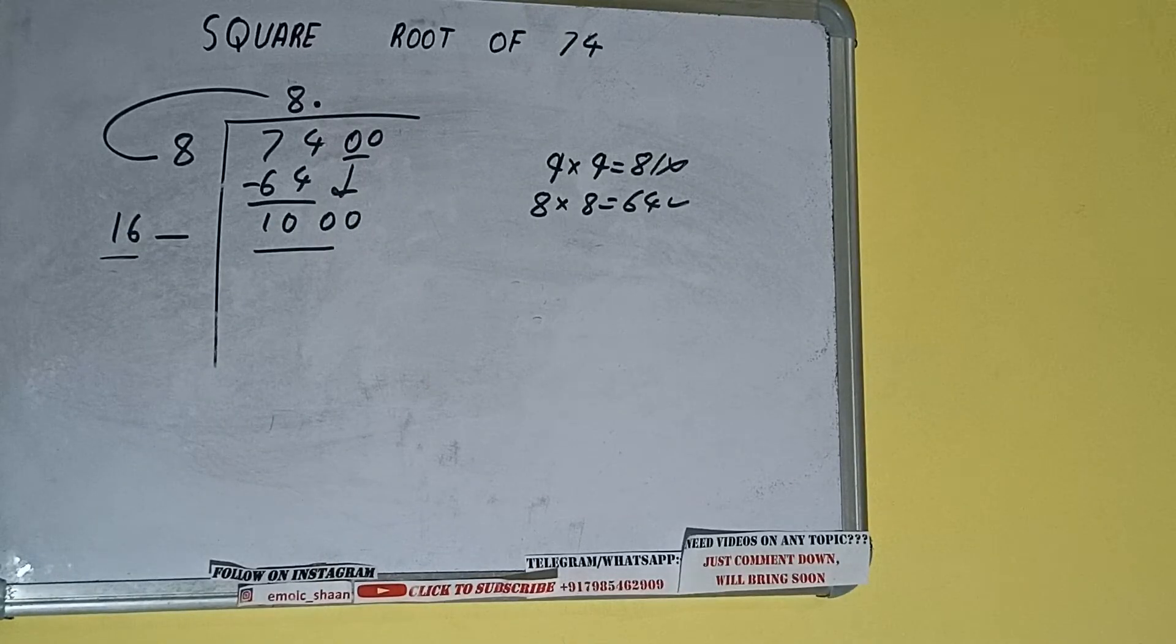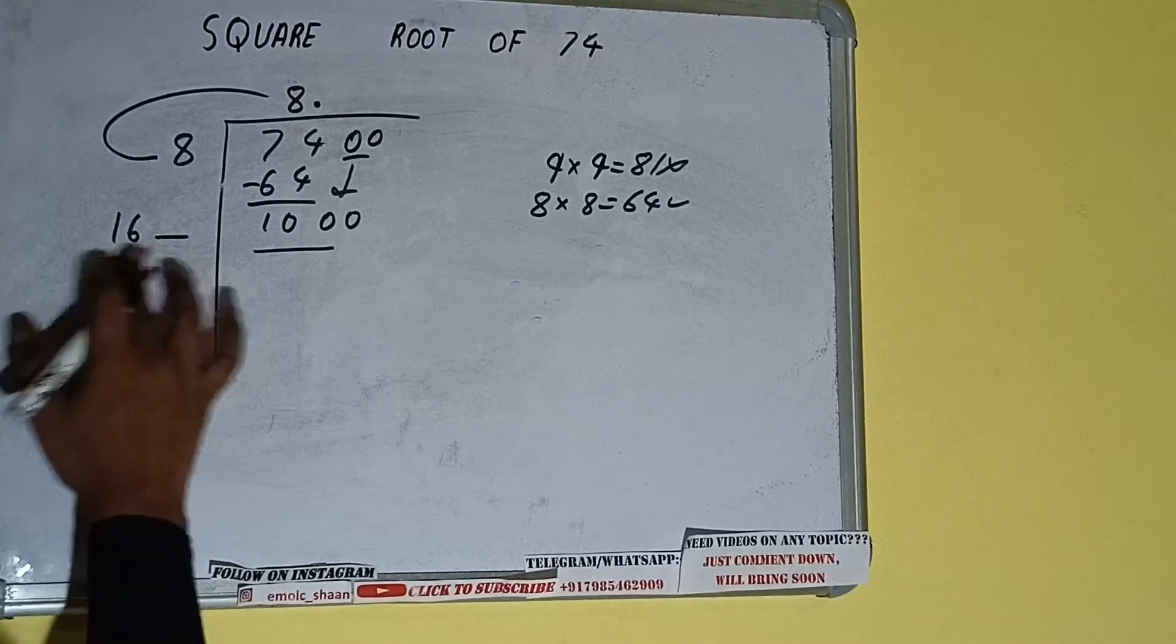So we can compare this 16 with this 100. So 16, 5 times is 80. 16, 6 times is 96. So we can try 6 times.